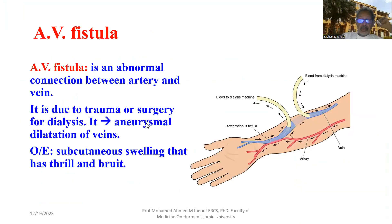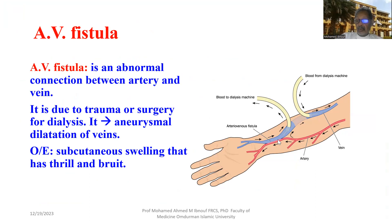Now, arteriovenous fistula. This may arise because of trauma or might be constructed during surgery, particularly for hemodialysis. It is a connection between the vein and the artery, and it usually causes aneurysmal dilatation of the vein to facilitate puncturing for dialysis — this blood goes to the dialysis machine, and here is blood coming from the dialysis machine.